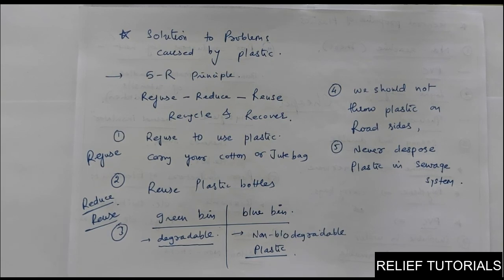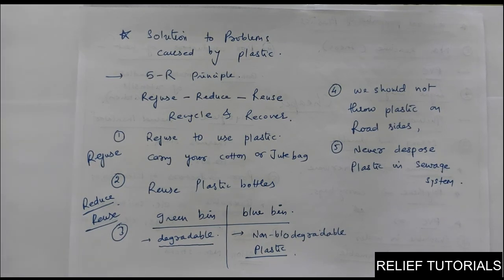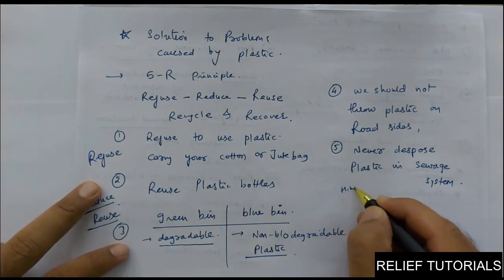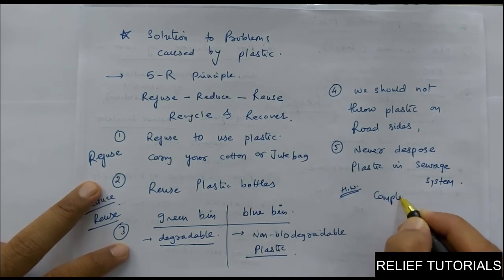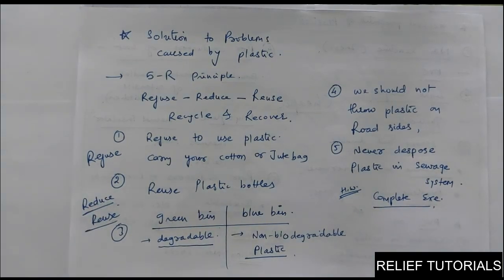These are the five solutions to get rid of problems created by plastics. This is the end of the chapter and concepts. We should develop environment-friendly habits to get rid of the harmful effects of plastics. Students, keep practicing — you have exercises on pages 52-53. Please refer to them, and if you have any doubt you can call at any time. Your homework is to complete the exercise. Best of luck!